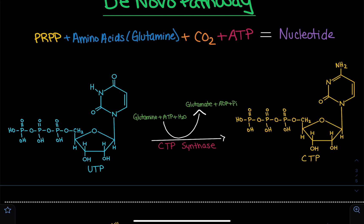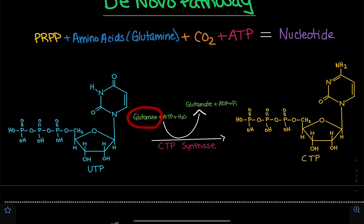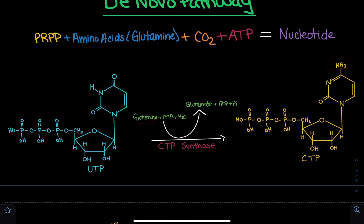Essentially, we are going to use the substrates glutamine, ATP, and H2O. Through this reaction, glutamine contains an amino group. When glutamine donates its amino group, it is converted into glutamate, because the only difference between glutamine and glutamate is that glutamine has that extra nitrogen and glutamate does not. So glutamine is going to donate its nitrogen, and that nitrogen donated from glutamine is the nitrogen incorporated here.